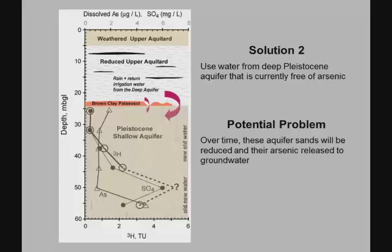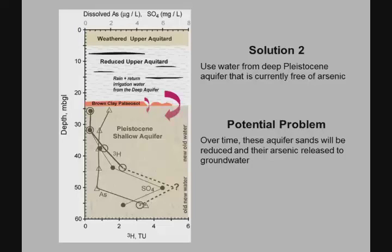Another option is to drill into the brown, older aquifer that doesn't have much arsenic. That has been done. But over time, because of groundwater flow, it's possible these orange sands might turn grey, and the arsenic might be released. The timeframe for that is probably longer term, so at the moment it's actually quite a good solution — if you have the money to drill a deep well, which is more expensive than a shallow well.